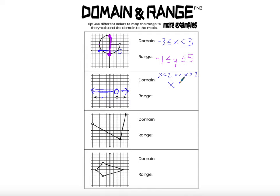When I say x does not equal 2, I imply that x can be anything else — all real numbers except for 2. Looking at the range, there is only one value: every point on this graph has a y-coordinate that is the same — it is negative 2.